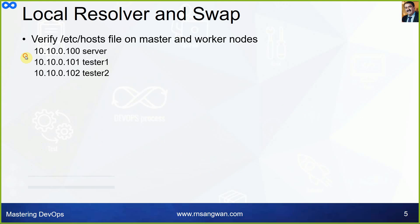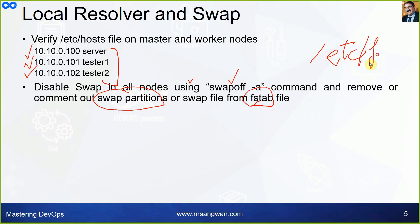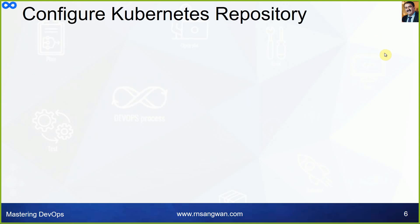Disable swap on all nodes using 'swapoff -a', or remove the swap partition entries from /etc/fstab. That is what I demonstrated. Then configure the Kubernetes repository — the repo file name can be anything but must have a .repo extension.